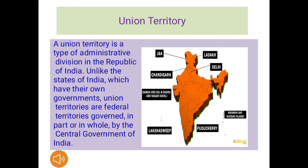You can also see the map on this page. There you can see first Jammu and Kashmir, written as J&K, then Ladakh, then Chandigarh, then Delhi, then Daman and Diu, then Dadra and Nagar Haveli, then Lakshadweep, Puducherry, and Andaman and Nicobar. These are the Union Territories of India.